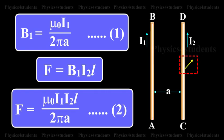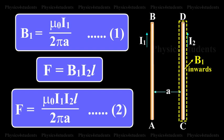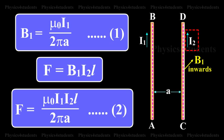This magnetic field acts perpendicular to the plane of the paper and inwards. The conductor CD with current I2 is situated in this magnetic field.